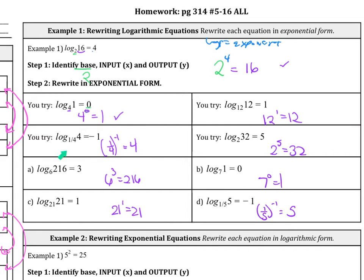So trying this out, we see that you should have gotten 12 to the 1 equals 12, right? The base is 12. The exponent is 1 equals 12. Then you get 1 fourth raised to the negative 1 equals 4. And that's true. Log base 2 of 32 equals 5 is 2 to the 5 equals 32. 6 to the 3 equals 216. 7 to the 0 equals 1. 21 to the 1st power equals 21. And 1 fifth to the negative 1 equals 5.